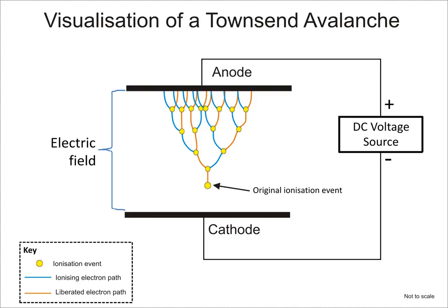One particular cation, that of hydrogen, contains no electrons and thus consists of a single proton, making it very much smaller than the parent hydrogen atom. Since the electric charge on a proton is equal in magnitude to the charge on an electron, the net electric charge on an ion is equal to the number of protons in the ion minus the number of electrons.